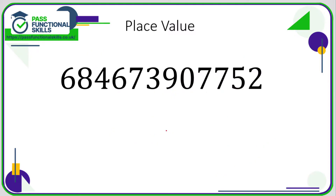Now let's look at how we actually say numbers or write them down in words. This is a really complicated number and it's almost impossible to read — it almost needs some punctuation. What I would suggest is going from right to left, put a comma in after every group of three: 1, 2, 3 — comma; 1, 2, 3 — comma; 1, 2, 3 — comma.